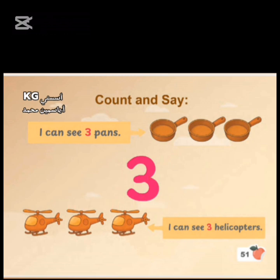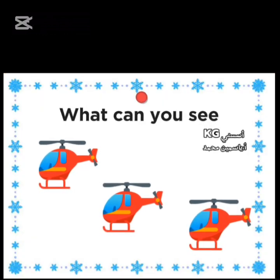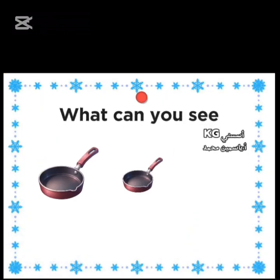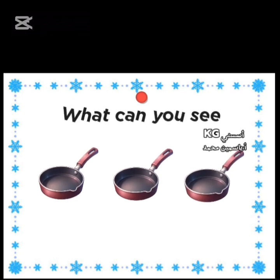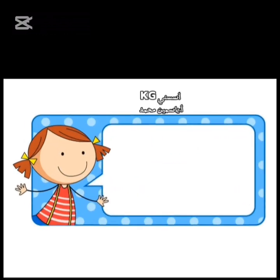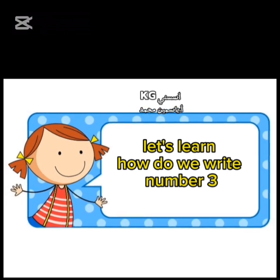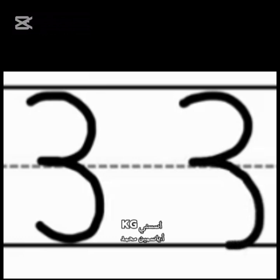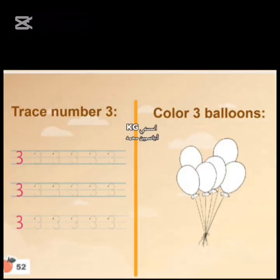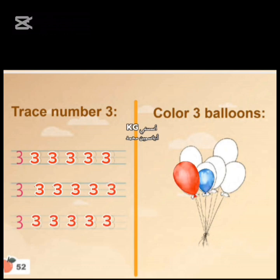Page 51. Let's count and say, what can you see? I can see three helicopters. I can see three pants. Let's learn how to write number three: semi-circle and semi-circle again. Excellent. Let's try again. Semi-circle and semi-circle again. Page 52. Trace number three. Color three balloons.